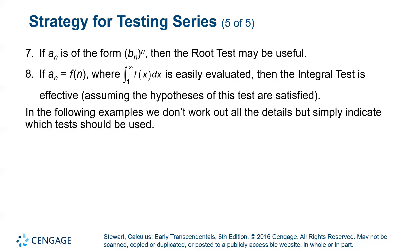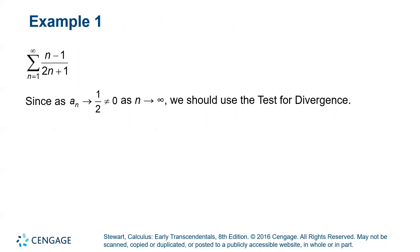So all of the examples in this section are not determining convergence or divergence but rather determining which test would be the most useful for the series. So let's look at those. n minus one over two n plus one. So right off the bat we can tell that the limit as n approaches infinity of n minus one over two n plus one is one half using the rules of limits that we've learned in calculus one. Well that limit is not zero which means we should use the test for divergence.